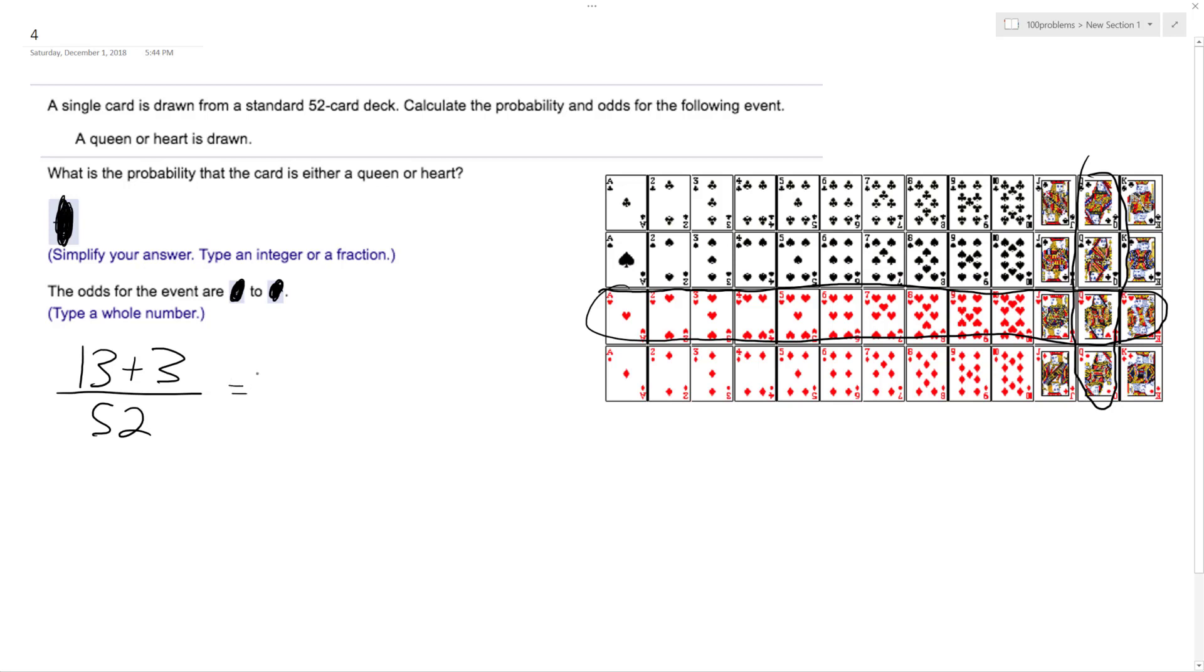16 over 52, which reduces down to—four goes into both of them—four over 13. So that's our probability of it either being a queen or a heart.